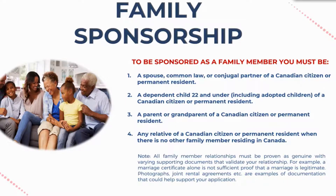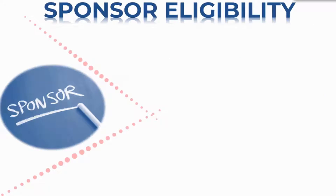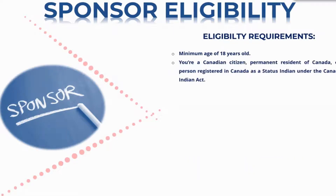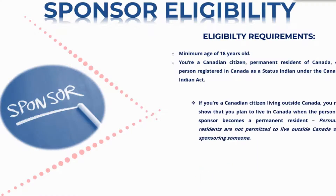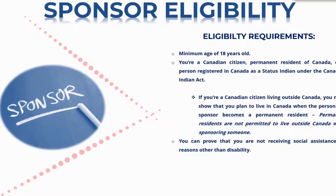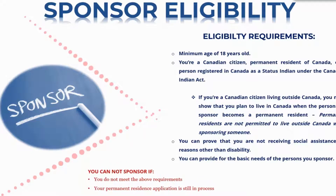The first step of the process is to determine if the sponsor is eligible to sponsor the spouse, partner, or child. Eligibility requirements are: you must be 18 years of age or older, a Canadian citizen or permanent resident of Canada, or registered in Canada as an Indian under the Canadian Indian Act. If you are a Canadian citizen living outside of Canada, you must show proof of your plan to reside in Canada once the permanent resident application is approved.